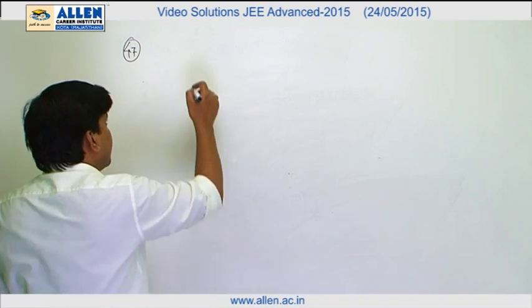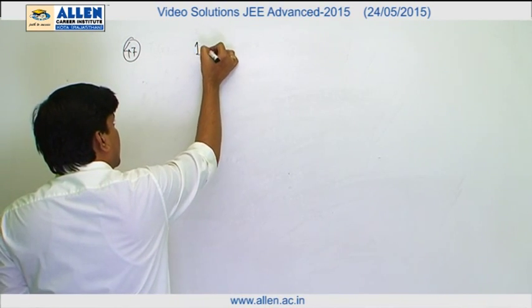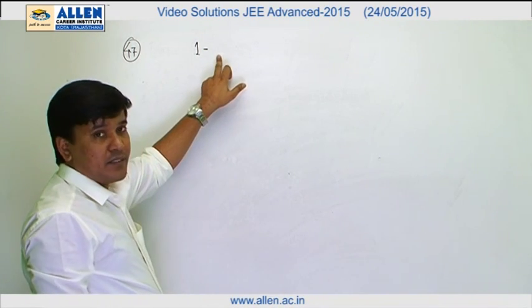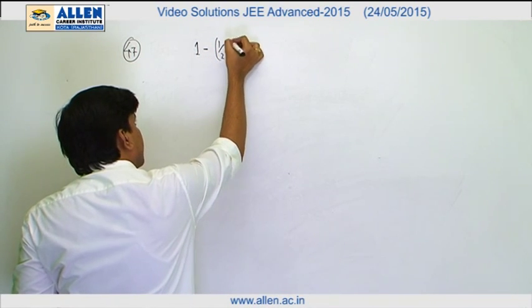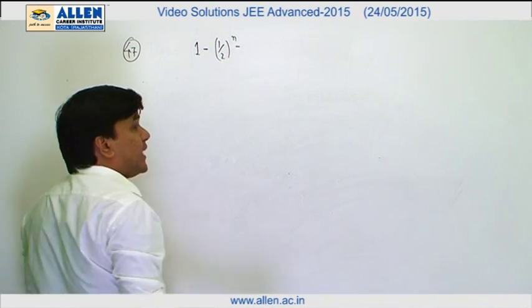For that purpose, we can subtract the two cases from one. First all tails, so this is going to be half raised to the power n minus 1 head and remaining tails.